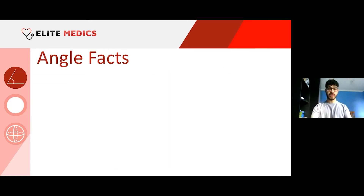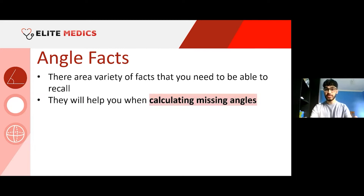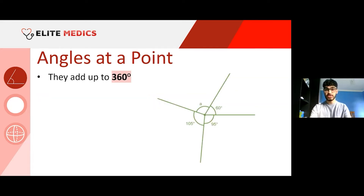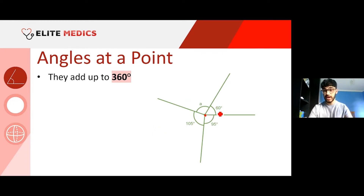Now some angle facts. There are a variety of facts you need to be able to recall to help calculate missing angles. We have specific scenarios — for example, angles at a point. At a specific point, we can have any number of lines. There's always going to be at least two lines to make an angle by definition, but there could be more.